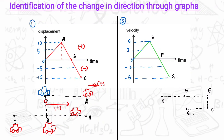On the velocity-time graph, when time equals 0, the velocity is 0 and the object is at O. From O to E, there is acceleration, so the object moves from O to E. Then there is a deceleration, but the velocity is still positive, so it will move to F.